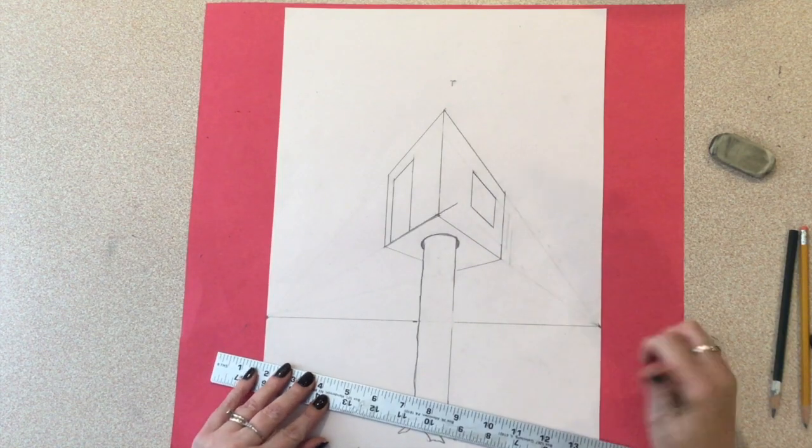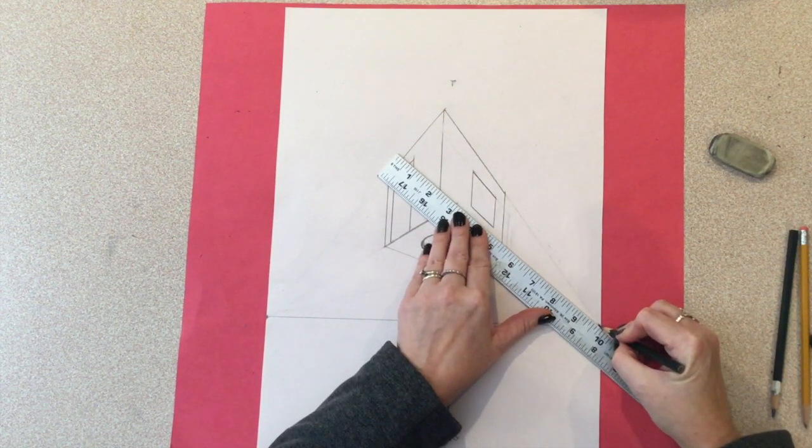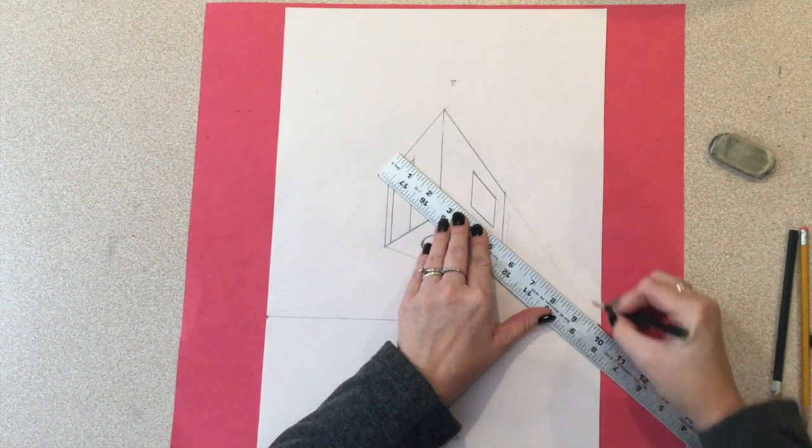Then, I line my ruler up with the vanishing point on the right side to connect the line I just drew past my house.